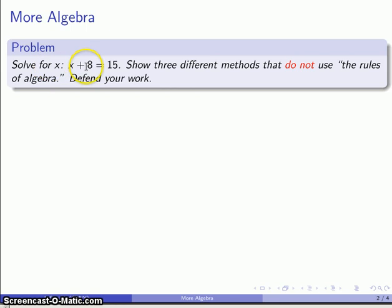So solve for x: x plus 8 is equal to 15. And let's use three different methods without relying on these so-called rules of algebra. These are things like you can add the same thing to both sides and you can subtract the same thing from both sides and similar things. You don't actually need these rules. They are irrelevant to the practice of algebra.